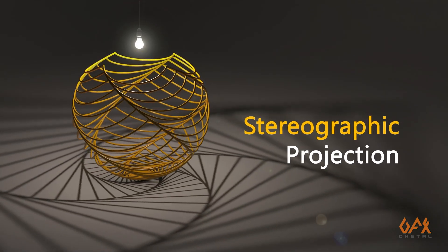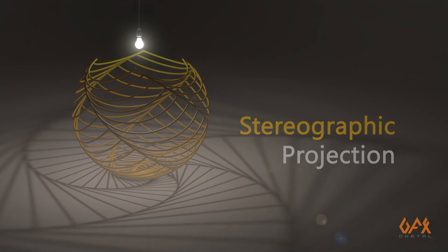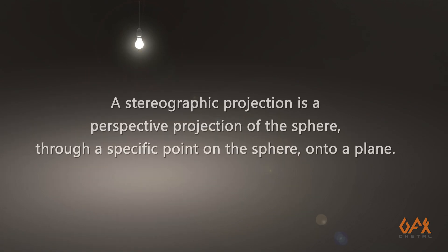So first of all, what is stereographic projection? Stereographic projection is a perspective projection of the sphere through a specific point on the sphere onto a plane.